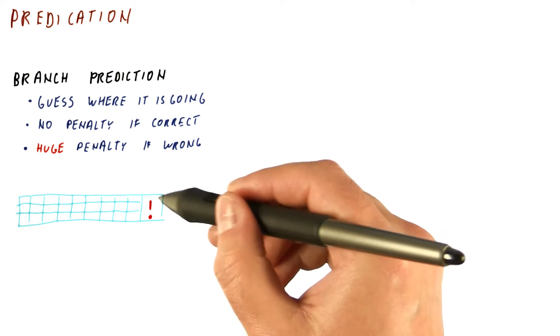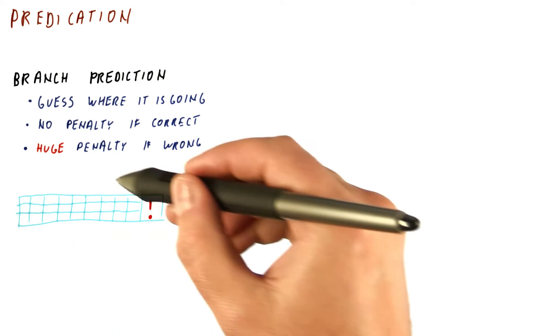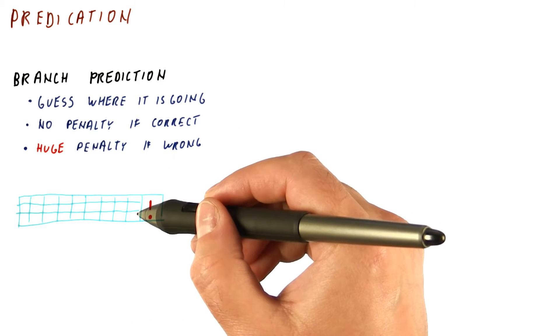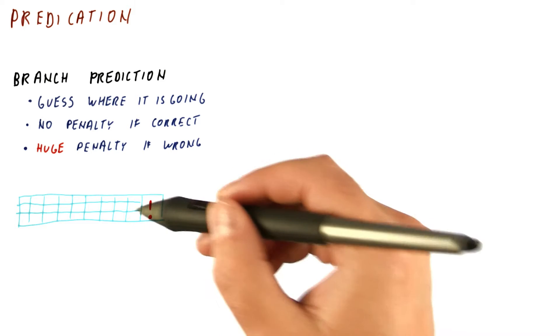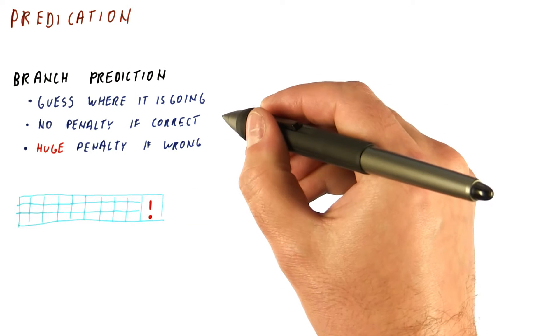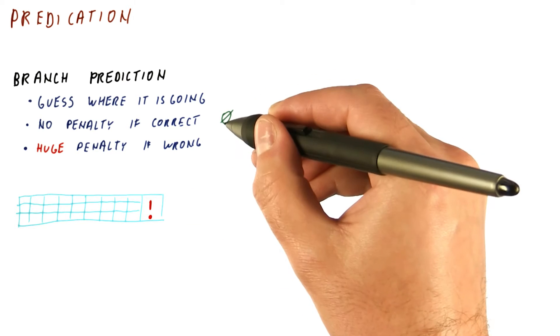So a misprediction results in throwing away all of that work. Usually, at least several tens of instructions worth of work. So the penalty is usually zero instructions here.